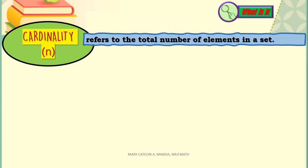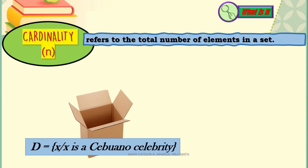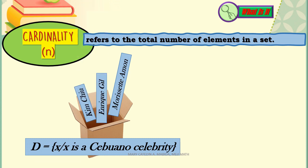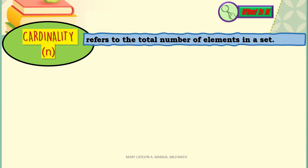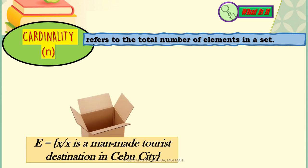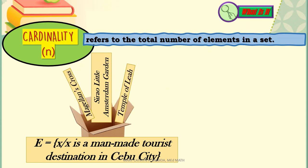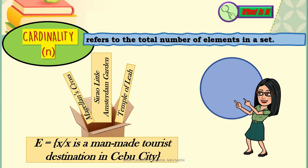For set D — x such that x is a Cebuano celebrity — we have Morissette Amon, Enrique Hill, and Kim Chu. There are 3 elements, so the cardinality of set D is 3. And lastly, set E is a man-made tourist destination in Cebu City. We have Sirau Little Amsterdam Garden, Temple of Leia, and Magellan's Cross — 3 elements. The cardinality of set E is 3.